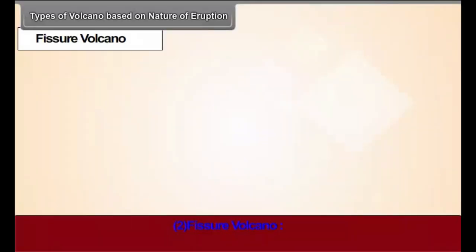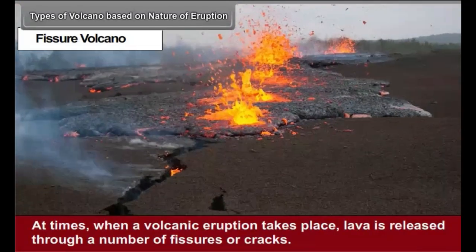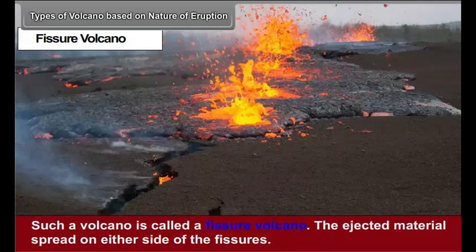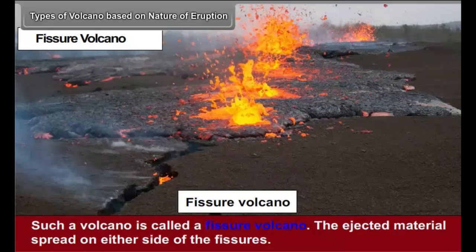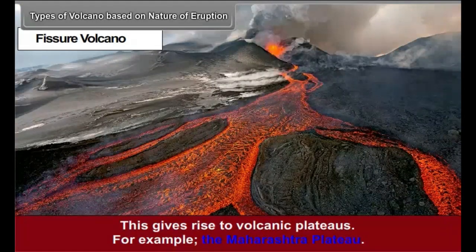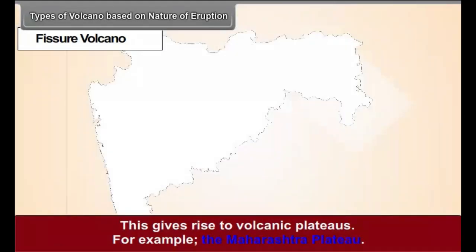Fissure volcano. At times, when a volcanic eruption takes place, lava is released through a number of fissures and cracks. Such a volcano is called a fissure volcano. The ejected material spreads on either side of the fissures. This gives rise to volcanic plateaus, for example, the Maharashtra Plateau.